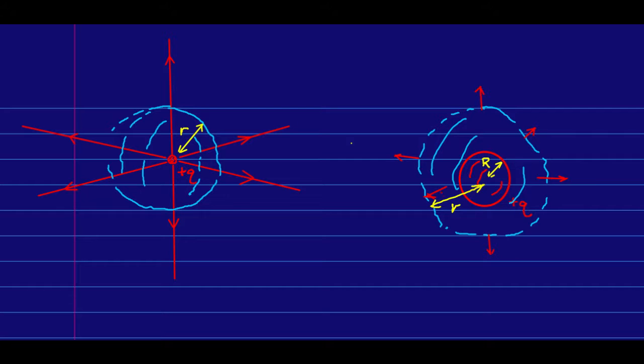And that tells us that the number of E field lines through the sphere is the same, which means the density of E field lines on the sphere is the same.